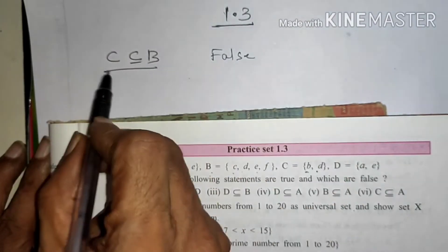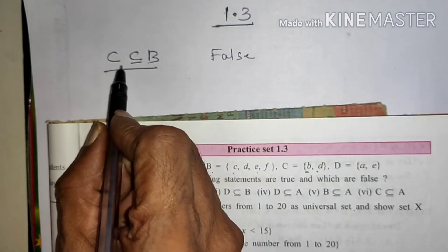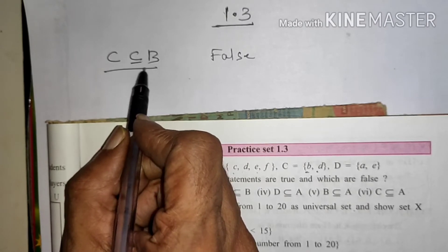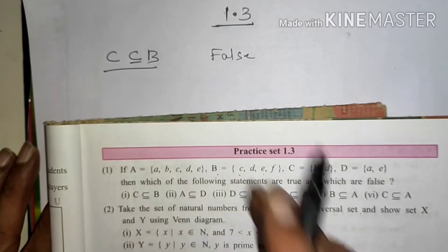Because our subset definition is if all elements of C contains in set B, then only we can say C is subset of B.